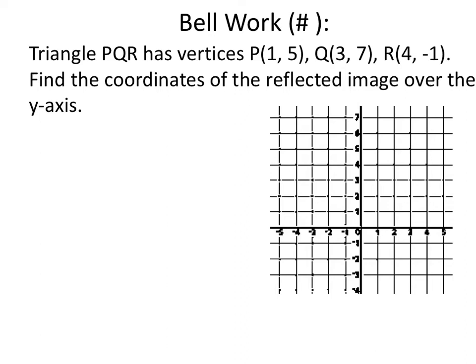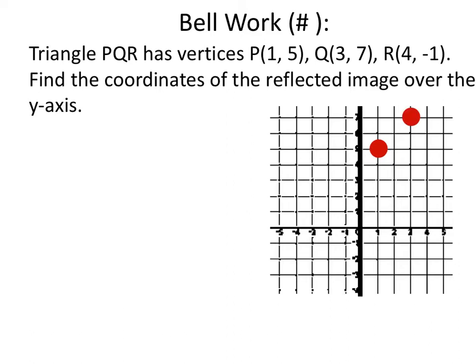Let's go ahead and reflect this triangle over the y-axis. We'll get ourselves a nice line of reflection — the black line right there — and we'll put P at one, five. Q is three, seven, and R is four, negative one.